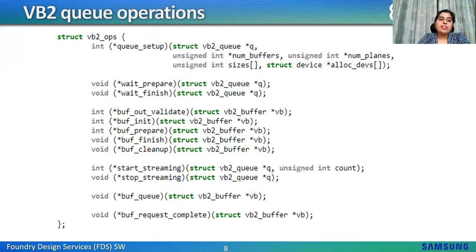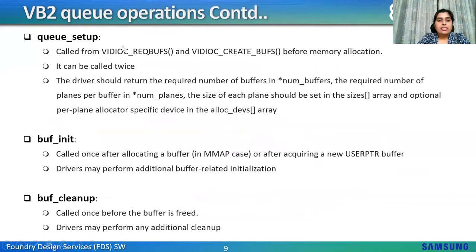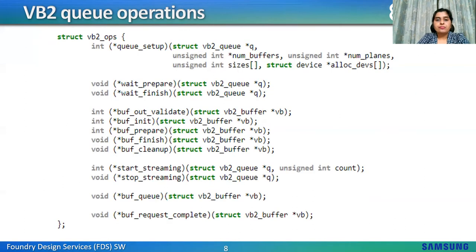As mentioned, these are driver-specific callbacks not called from interrupt context. queue_setup is called from request_buf or create_buf before actual memory allocation. It can be called twice if the original number of requested buffers could not be allocated — the second time with the actually allocated number to verify. The driver should return the required number of buffers in num_buffers, number of planes per buffer in num_planes, sizes of each plane in the sizes array, and per-plane alloc devices in the alloc_devs array.